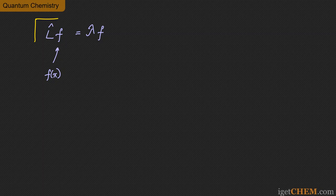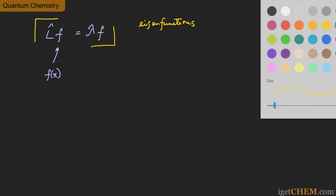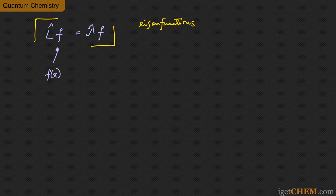Those functions that obey this equation are called eigenfunctions. You also have to look at the right side and understand that it gives you back the same function but multiplied by a constant. Lambda is not a function of x — lambda is a constant. These constants that are the solutions of this equation are called eigenvalues.